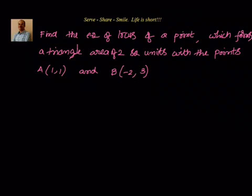Find the equation of locus of a point which forms a triangle area of 2 square units with the points A(1,1) and B(-2,3). So we have to find the equation of locus of a point, let us say P, such that area of triangle PAB equals 2 units.